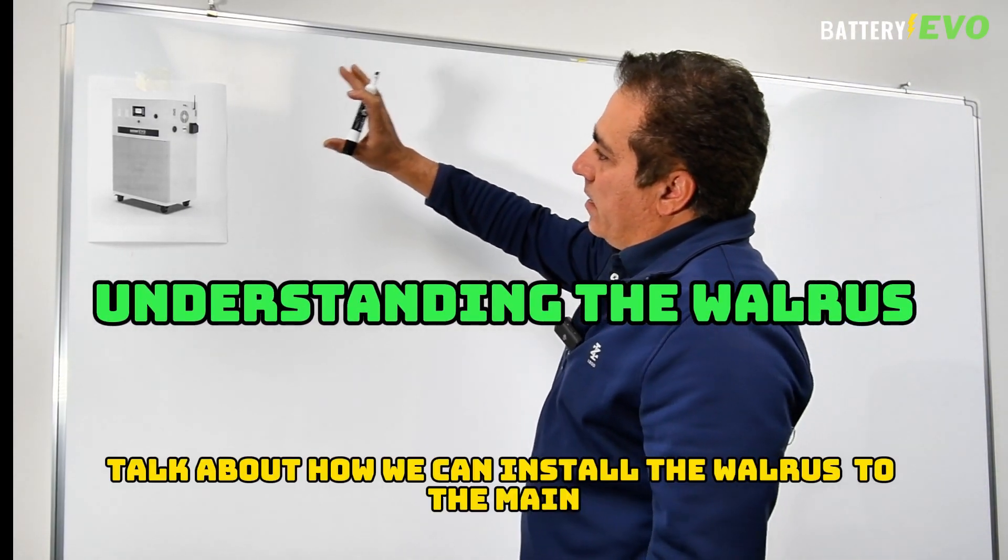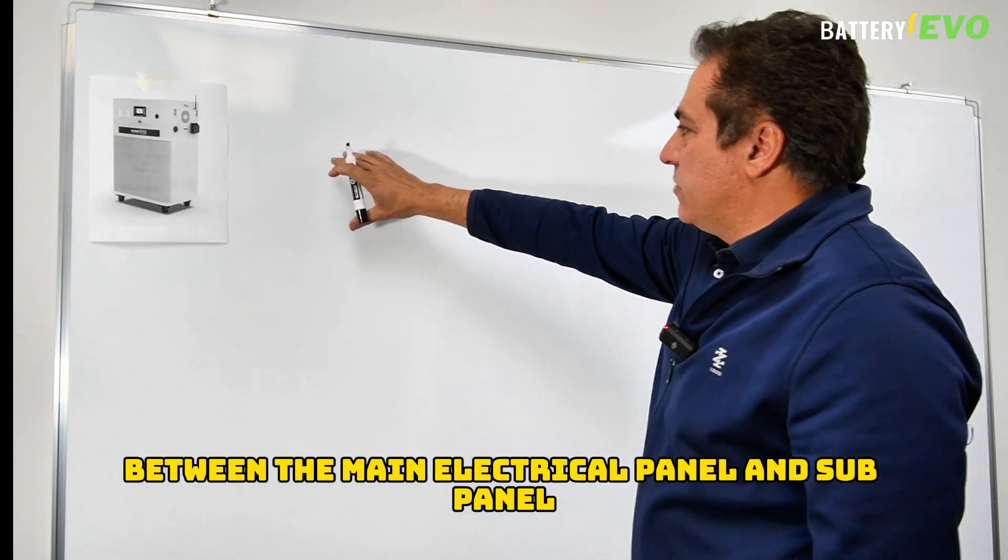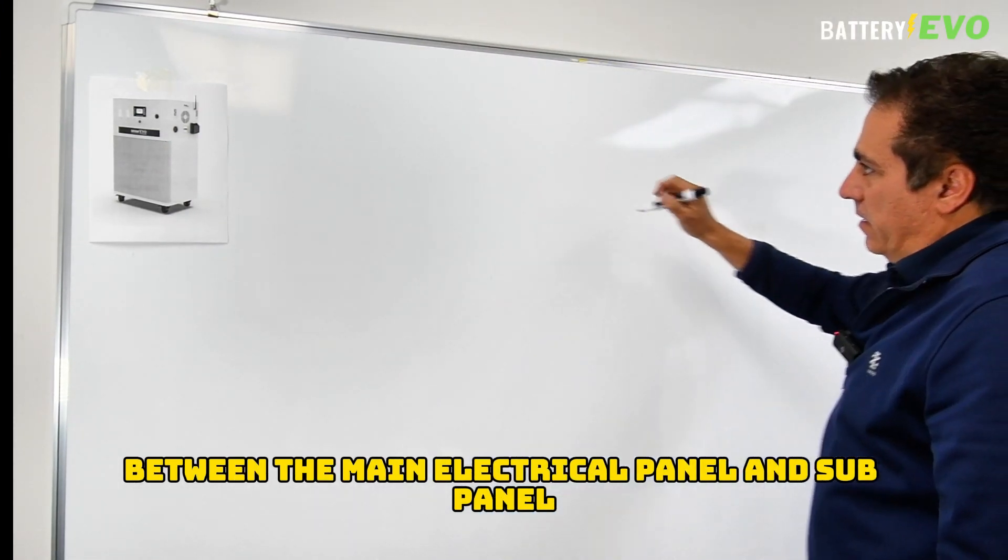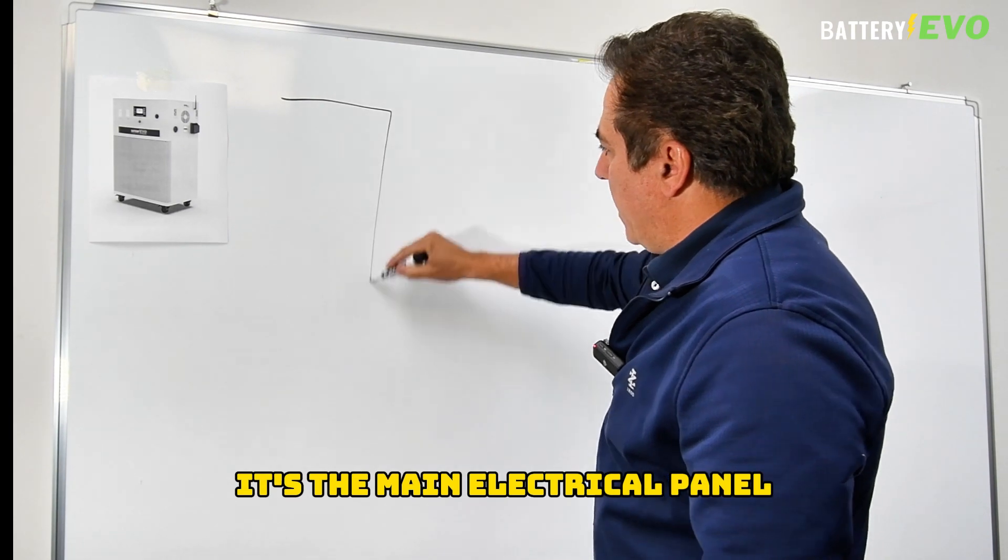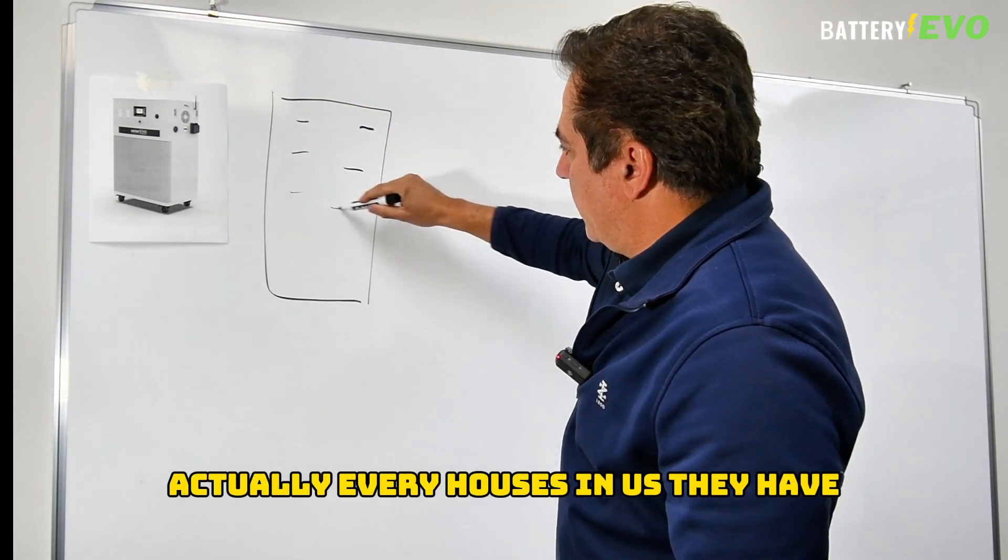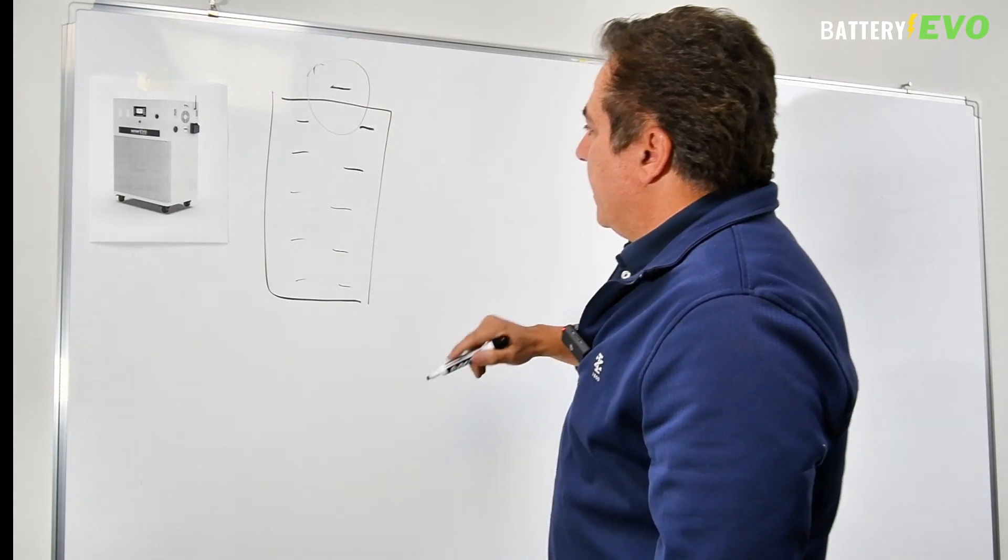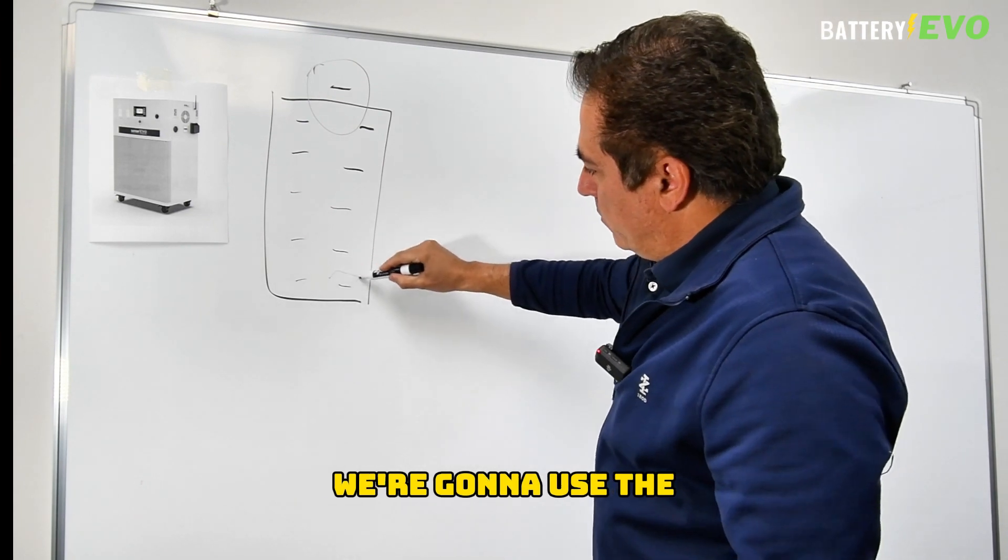Today we're going to talk about how we can install the rollers to the main between the main electrical panel and sub panel. So what we have is the main electrical panel. In most houses, actually every house in the US, they have a main electrical panel with a meter here. Now in order to connect it, we're going to use...